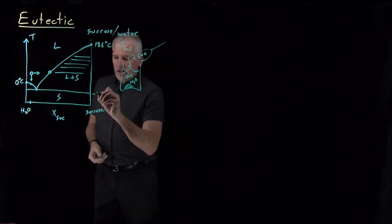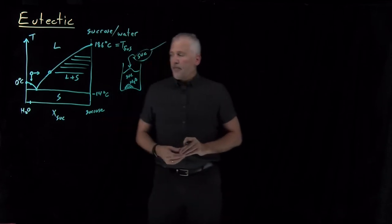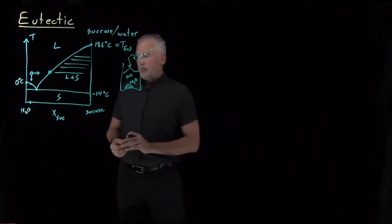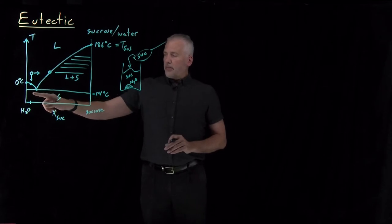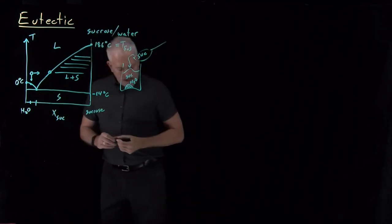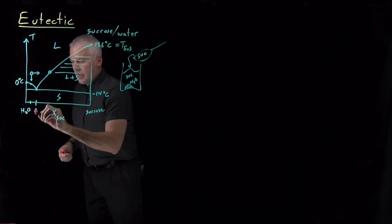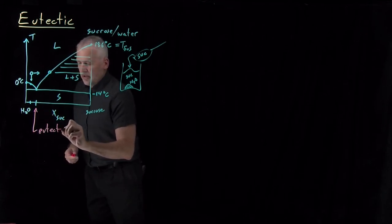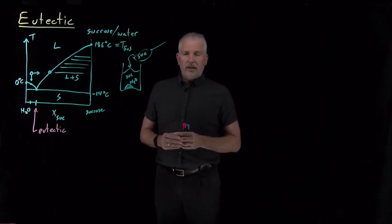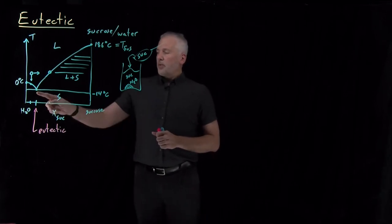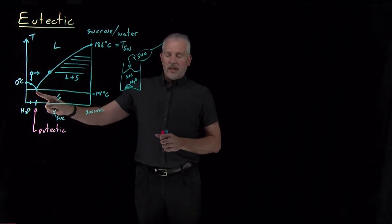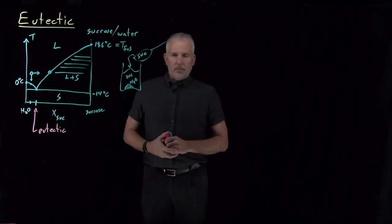If I continue these two curves both to the point where they meet, what I see is I can prepare solutions that freeze at freezing points significantly below the 0 degree Celsius freezing point of pure water and certainly well below the 186 degree freezing point of sugar. In fact, it turns out that limit on the coldest I can make the freezing point of those solutions turns out to be roughly negative 14 degrees Celsius. If I combine a roughly 10% sugar, 90% water by moles, that particular mixture has a name. That is called the eutectic mixture.